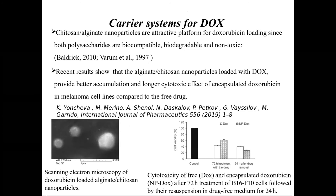In this particular case, the nanoparticle systems are chitosan-alginate nanoparticles. They are an attractive platform for doxorubicin loading because those polymers are biocompatible and non-toxic. There are also studies for doxorubicin loaded onto other particles, even carbon nanotubes or modified mesoporous silicate materials, but this study is focused on chitosan-alginate nanoparticles.